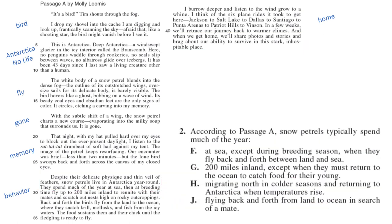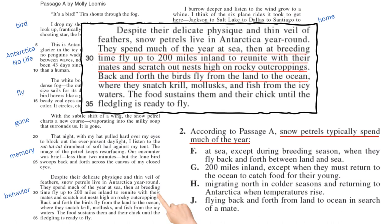Number two: according to passage A, snow petrels typically spend much of the year doing what? We marked this in our behavior paragraph. It says they spend much of the year at sea breeding, then they fly 200 miles inland to reunite with their mates and scratch out a nest. They fly back and forth between land and ocean, so they are at sea except when they fly back and forth. The answer is choice F.